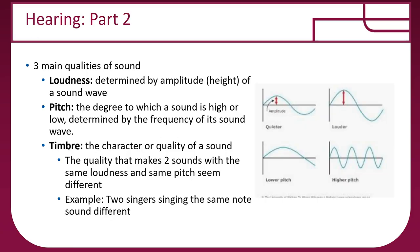There are three main qualities of sound. Loudness is determined by the amplitude — the height — of the sound wave: a higher amplitude means a louder sound. Pitch — whether a sound is high or low — is determined by the frequency of sound waves: a longer frequency produces a lower sound, and a shorter frequency produces a higher pitch. Timbre is the quality of the sound: two singers singing the exact same note at the same loudness still sound different — that's timbre.